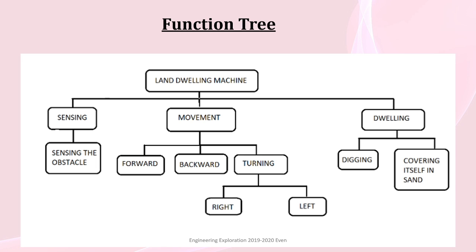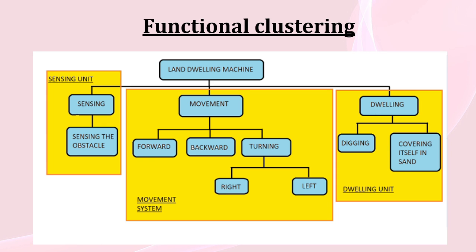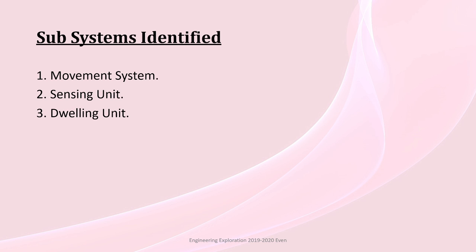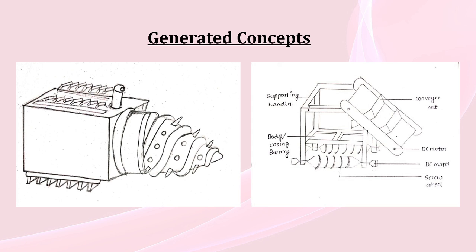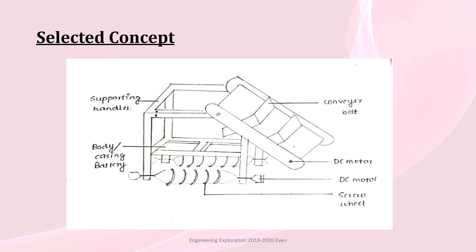Function Tree: We have divided our land dwelling bot into three main units: Sensing Unit, Movement Unit and Dwelling Unit. Sensing Unit consists of sensing the obstacles, Movement Unit consists of forward, backward and left and right movement of the bot. The Dwelling Unit consists of digging and covering the bot itself into the sand. Based on the three main subsystems identified, we have generated four different concept designs. Out of the four, we have selected the perfect concept with the help of a Pugh chart. The selected concept is number 4.